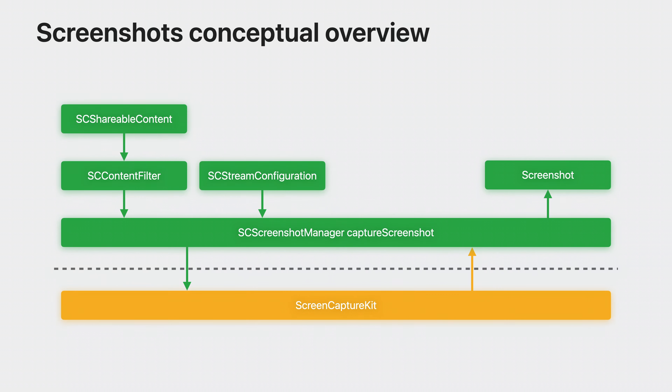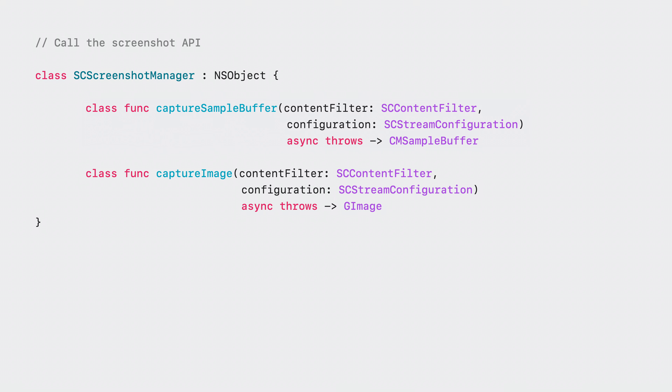You can also use the new system picker to create your content filter and then use that to call the screenshot API. This would be a great way to allow people to pick the content they want in an intuitive way. When it's time to take the screenshot, there are two versions of the API to choose from depending on what you need — one for the CMSampleBuffer output type and one for the CGImage output type. The two versions work the same way and will return your screenshot asynchronously.